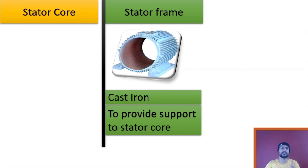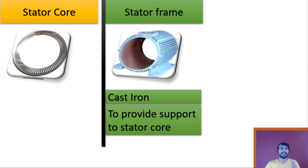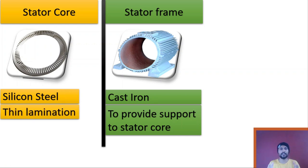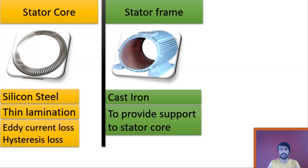The next important section is the stator core, which looks like this. The stator core is made up of silicon steel. Thin laminations of silicon steel are stacked together to form a complete stator core. These thin laminations are of the order of 0.25 mm up to 0.5 mm. The use of silicon steel material and thin laminations helps reduce eddy current loss and hysteresis loss.